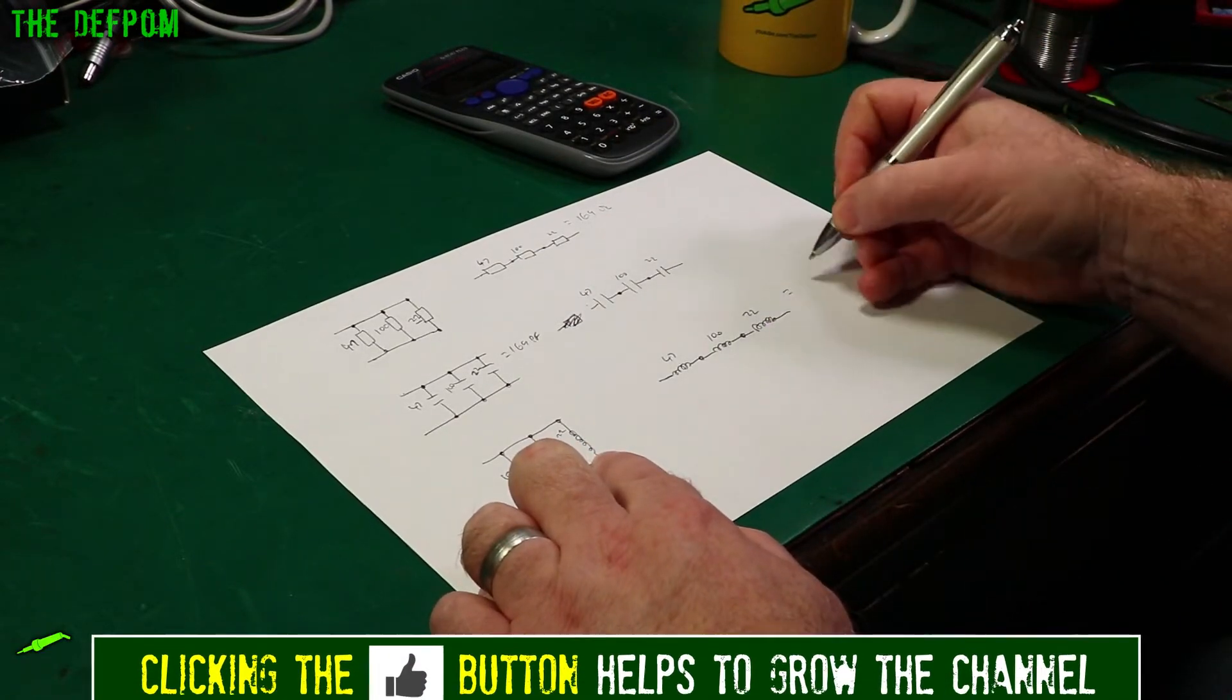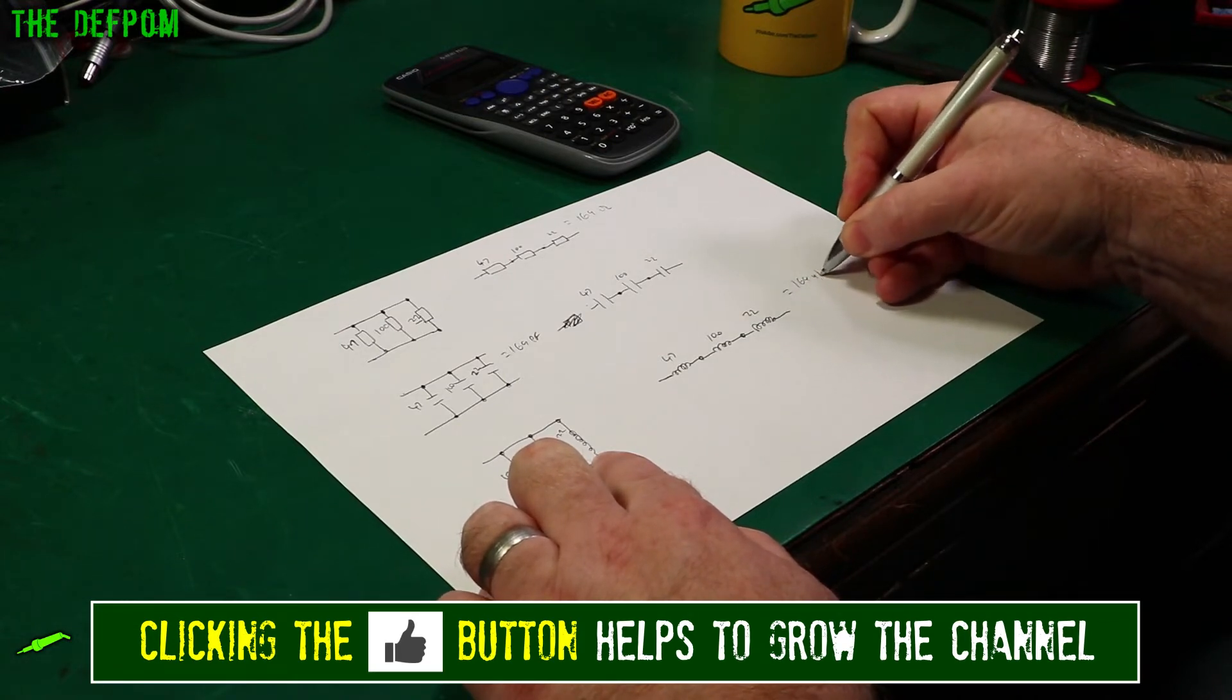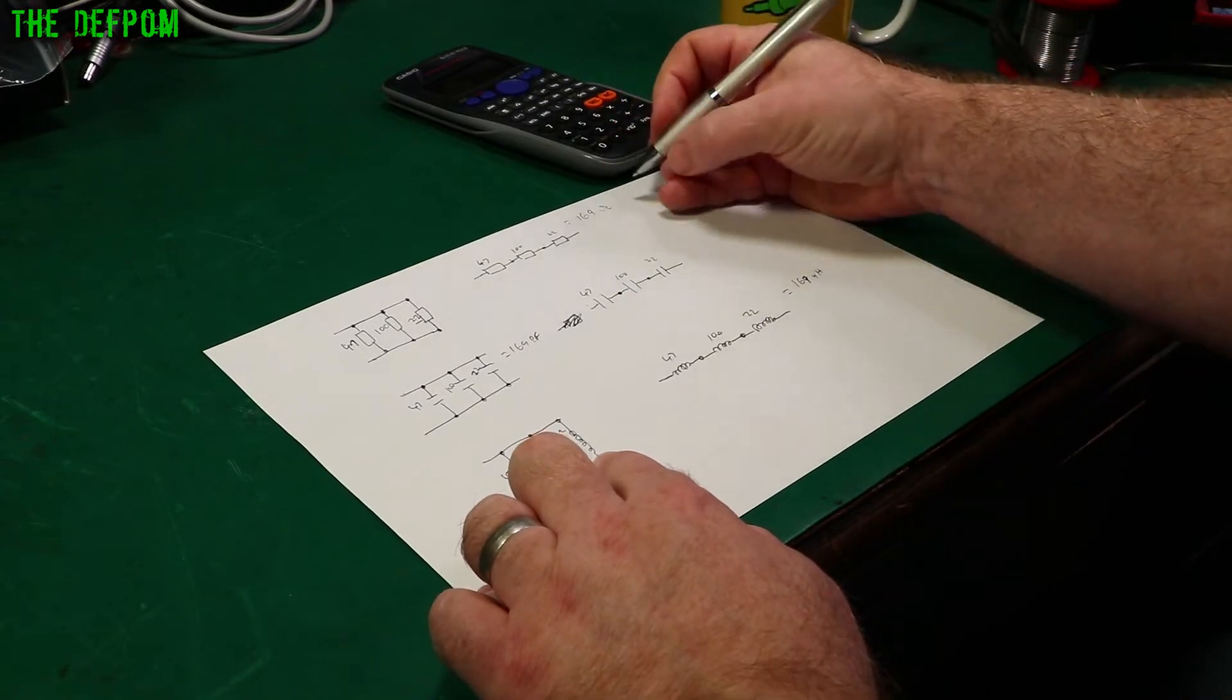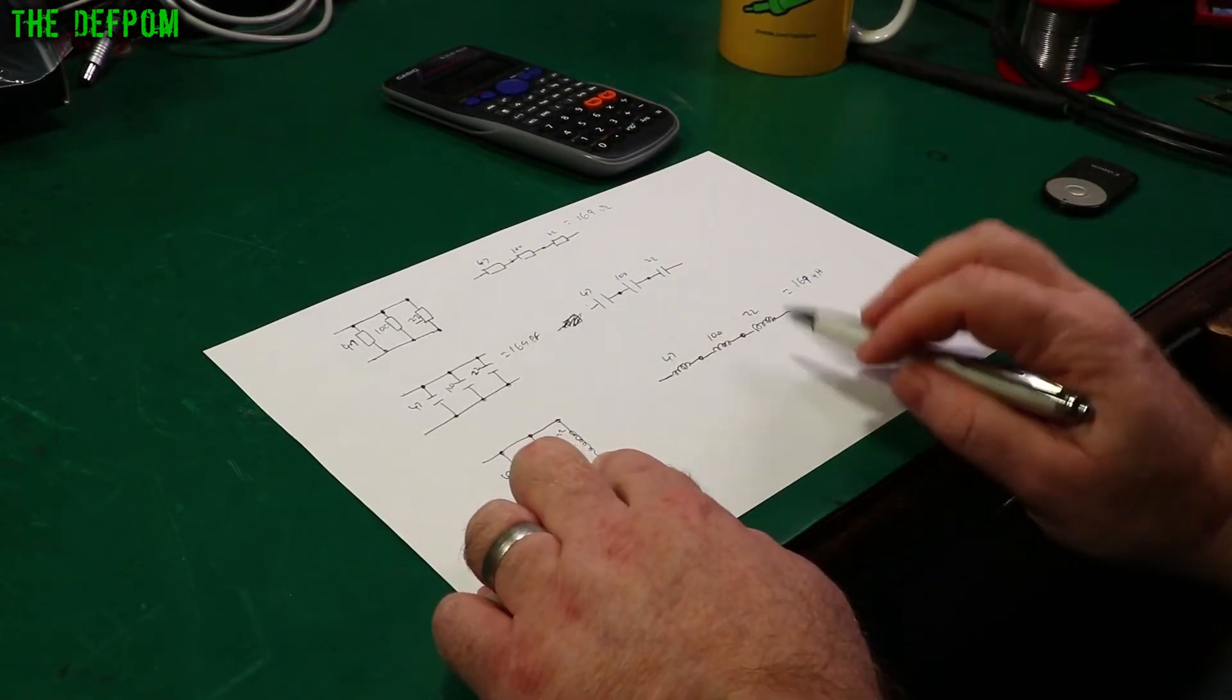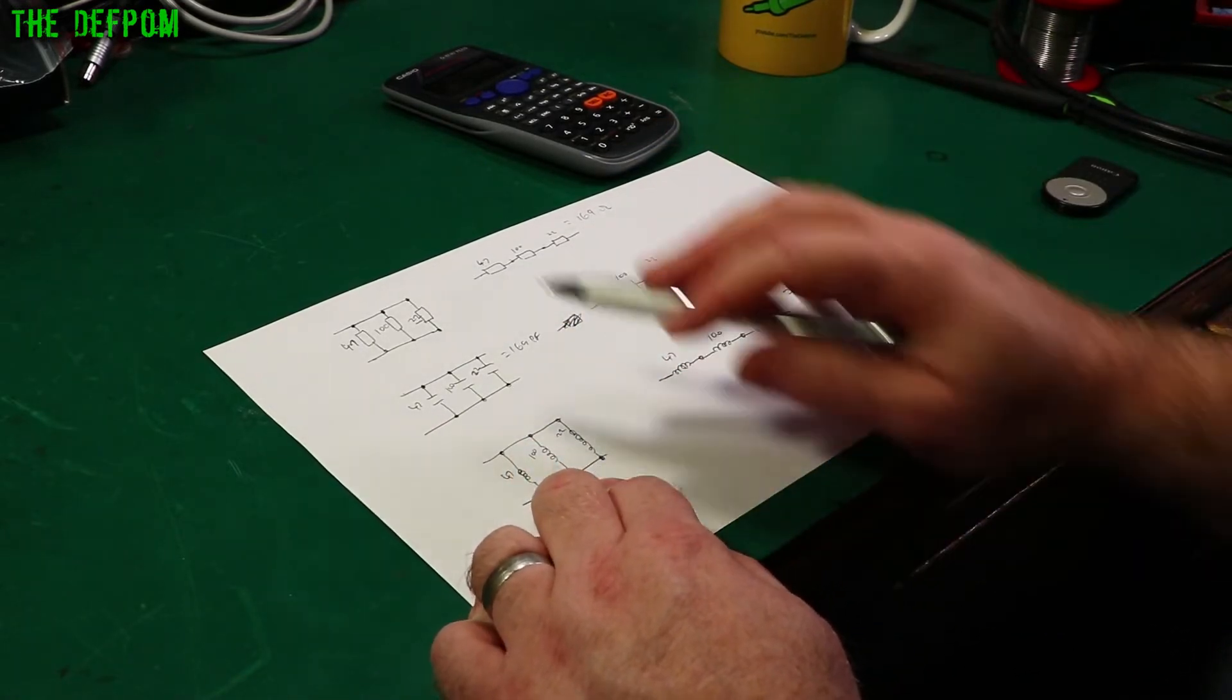So in inductors you treat them the same ways you would do a resistor. So therefore you add them together. That gives you 169 microhenry. So 169 ohms up here. 169 microhenry. So if they're in series you add them together. Same as resistors.